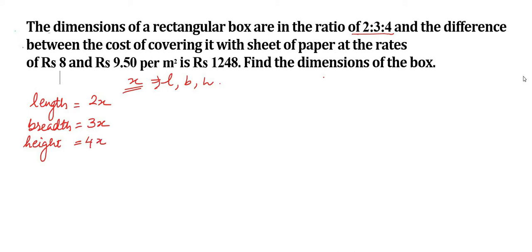When we find the cost of covering with sheet of paper or paint or cement, we need total surface area. The rectangular box is a cuboidal box, so total surface area of cuboidal box is twice length into breadth plus length into height plus breadth into height.